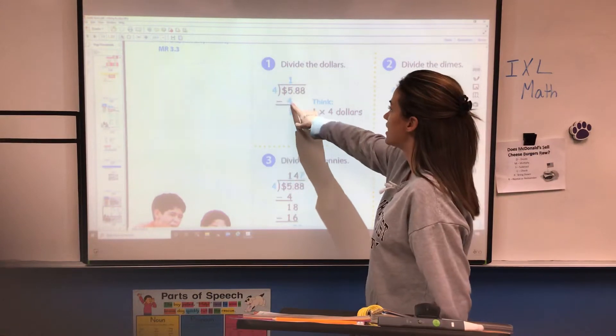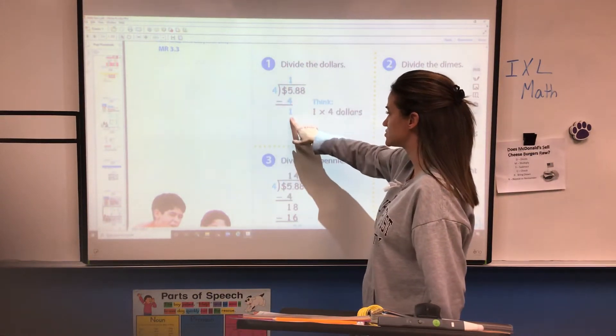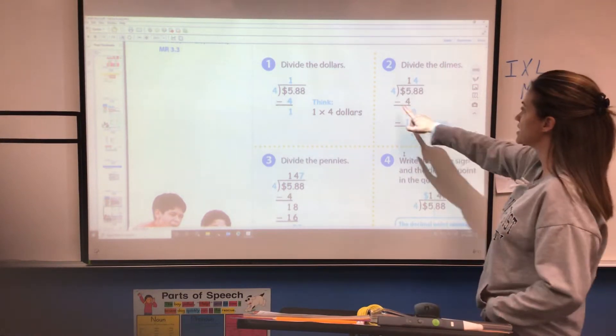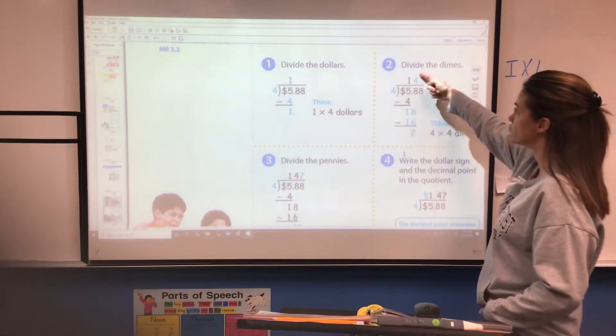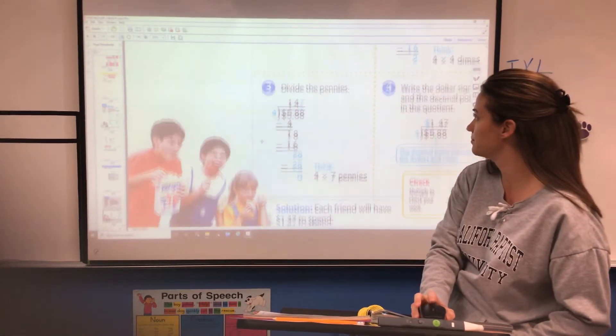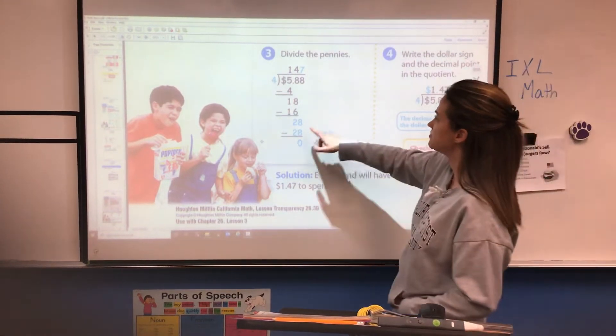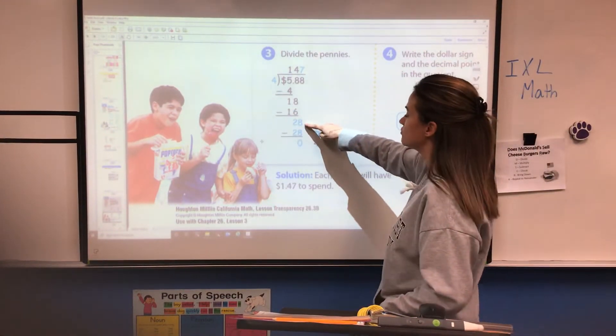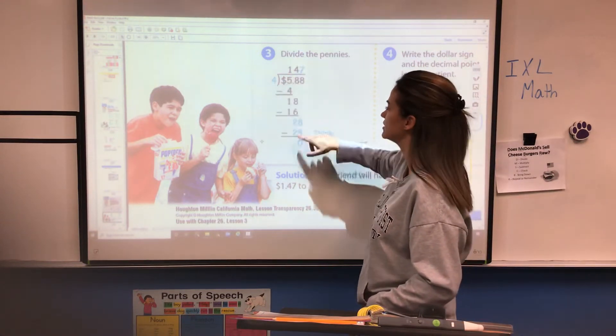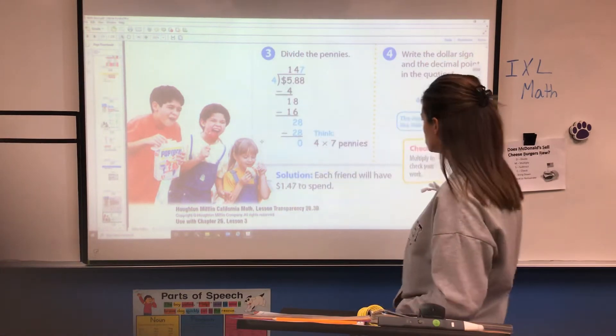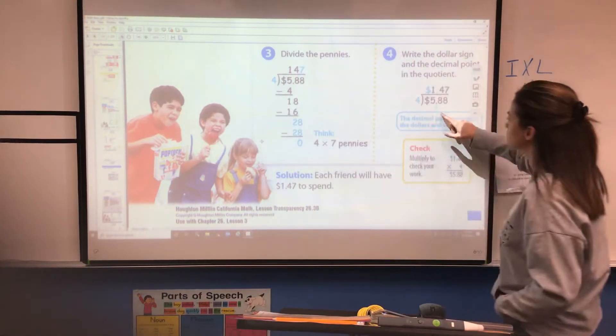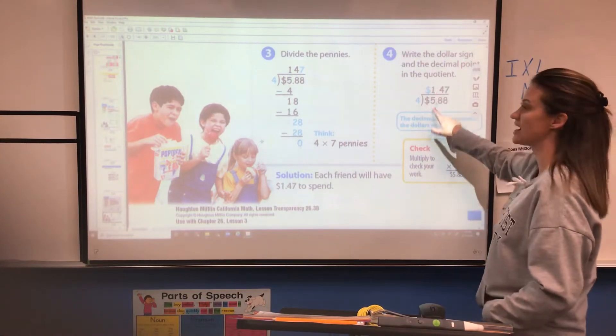Four goes into five one time. One times four is four with the subtraction. They brought the eight down. Now they're saying four goes into 18 four times. Four times four is 16 with two remaining. Next step is how many times will four go into 28? Four goes into 28 seven times. Four times seven is 28 with no remainder. Your problem looks done. You did the division. But now here's the extra step. All you have to do is bring the decimal point up exactly where it was.